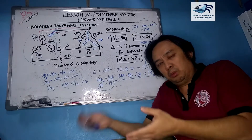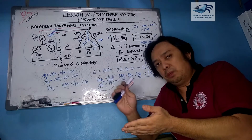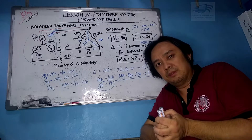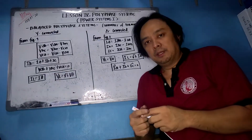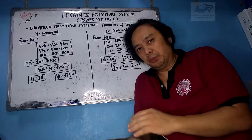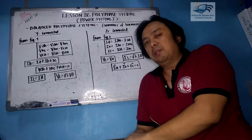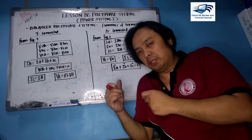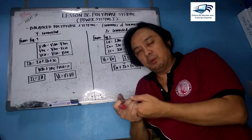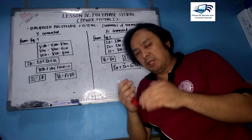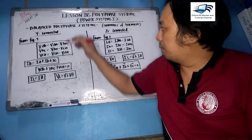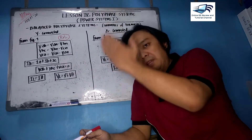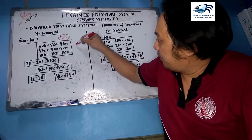Our next slide is the summary of the formulas we will use for balanced polyphase systems. Figure 1 is the Y-connected system, while Figure 2 is the delta-connected system, and some of these formulas can be easily derived from those figures. From Figure 1, applying KVL at some loops in terms of line voltages and phase voltages, we can arrive at a very important formula.